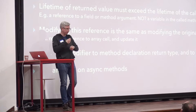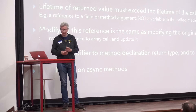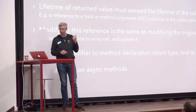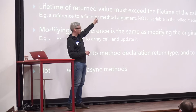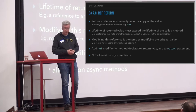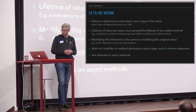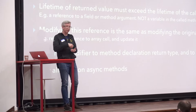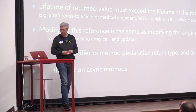This introduces some constraints. The lifetime of the return value must exceed the lifetime of the called method. Because we're on the stack, you can't return a reference to a local variable — once the method ends, it's gone and that reference is dead. But if you have a reference to a field, that's fine because the field lives longer. If you modify the reference, it's the same as modifying the original value because it IS the original value. One useful case: you can return a reference to a cell of an array, and editing it like a normal value will actually change the contents of the array.